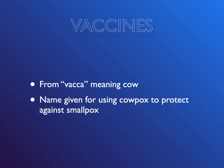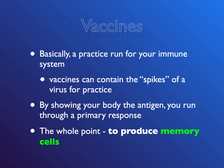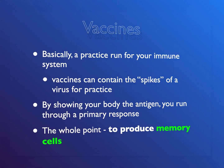That brings us to vaccines. The name vaccine comes from vaca, which is Spanish for cow — the name given for using cowpox to protect against smallpox. They used to infect people with cowpox, which wasn't deadly, but it would confer some protection against smallpox. Basically, a vaccine is a practice run for your immune system. Some vaccines contain the spikes of a virus for practice; when you show the body the antigen, you run through the entire primary response, produce memory cells, and when the actual virus shows up, you can fight it off in three to five days and show no symptoms.